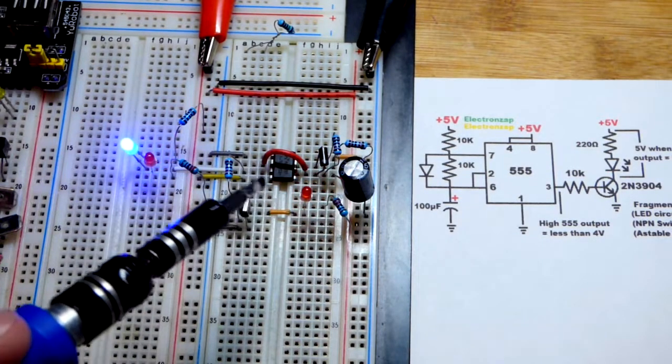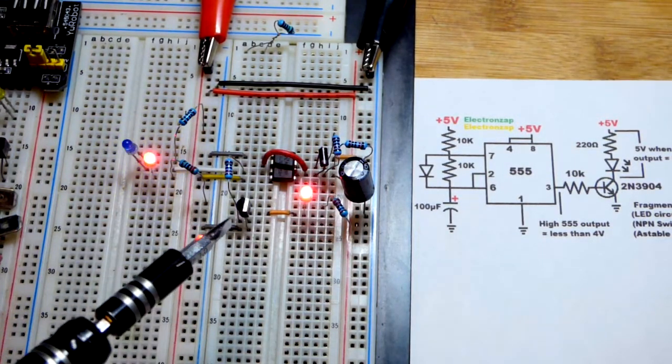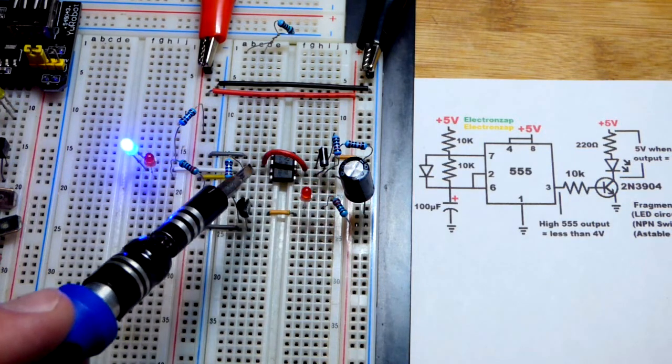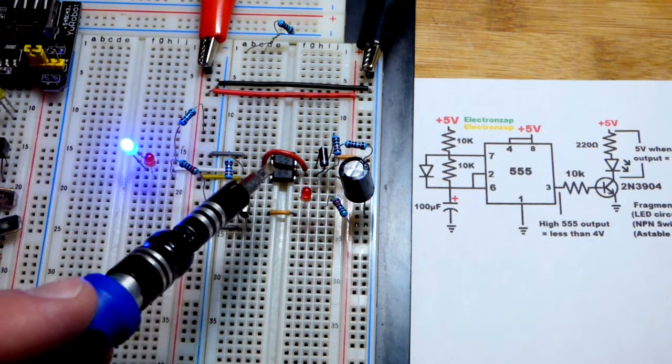In this video we're putting together a few circuit fragments that I covered in earlier videos. We have a 555 timer in astable mode. The output keeps going high or low.